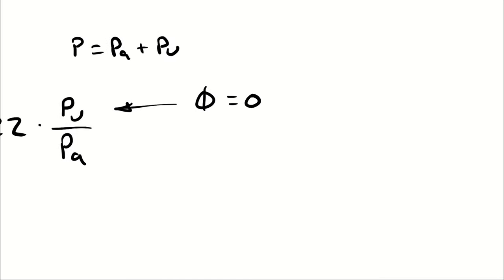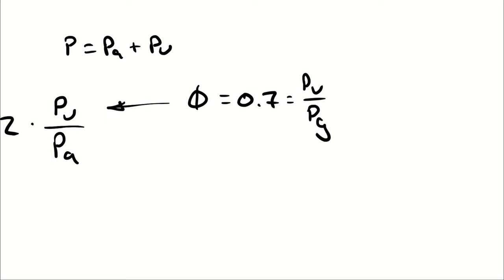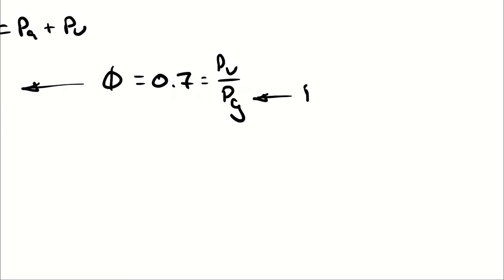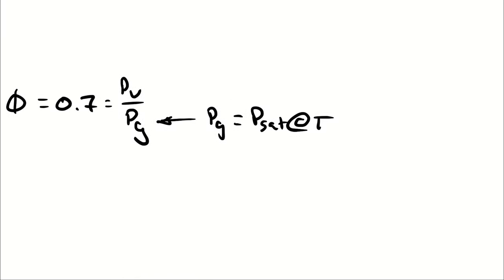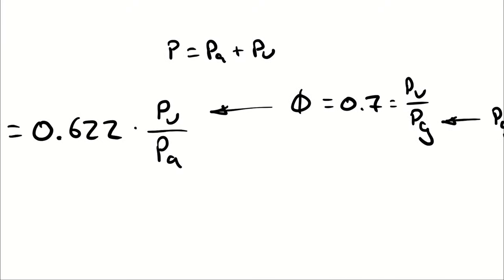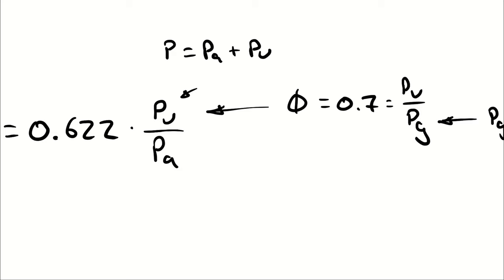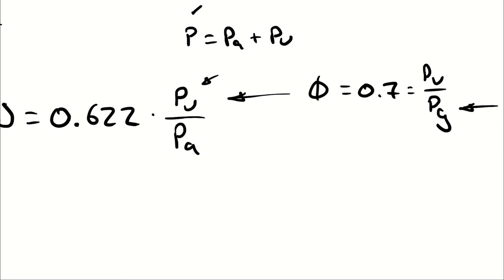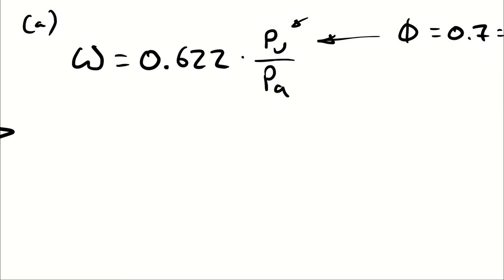We know our relative humidity is 0.7, and that represents the proportion of vapor pressure to the saturation pressure. The saturation pressure can be looked up — that's going to be our saturation pressure at our temperature. So if we look up Pg, we can take that number multiplied by 0.7 to get Pv, plug that into the numerator, and then take 100 kilopascals minus Pv to calculate Pa, plug that into the denominator, and we'll have our humidity ratio.